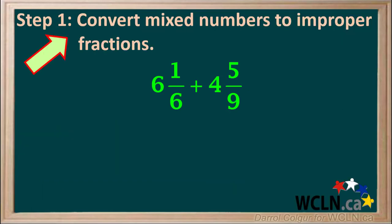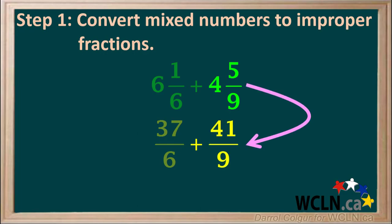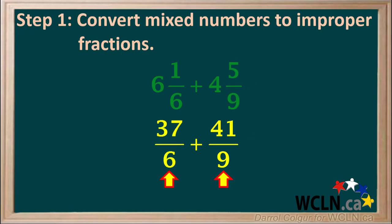First, we convert each mixed number to an improper fraction. What is 6 and 1 sixths as an improper fraction? We see it is 37 over 6. And what is 4 and 5 ninths as an improper fraction? We see it is 41 over 9. So now we have the improper fractions 37 over 6 and 41 over 9 to add up.